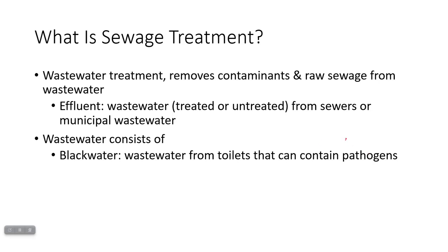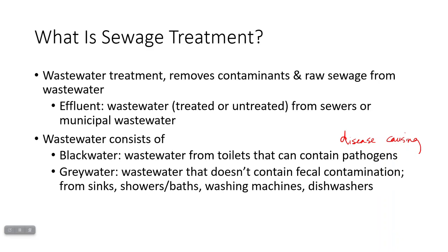Pathogens are disease-causing organisms. And then you can separate that at the source from gray water, which is wastewater that's not likely to contain fecal contamination, meaning it's not likely to contain pathogens. This comes from sinks, showers, washing machines, dishwashers — any place where water drains from a home or a business that does not come from a toilet.